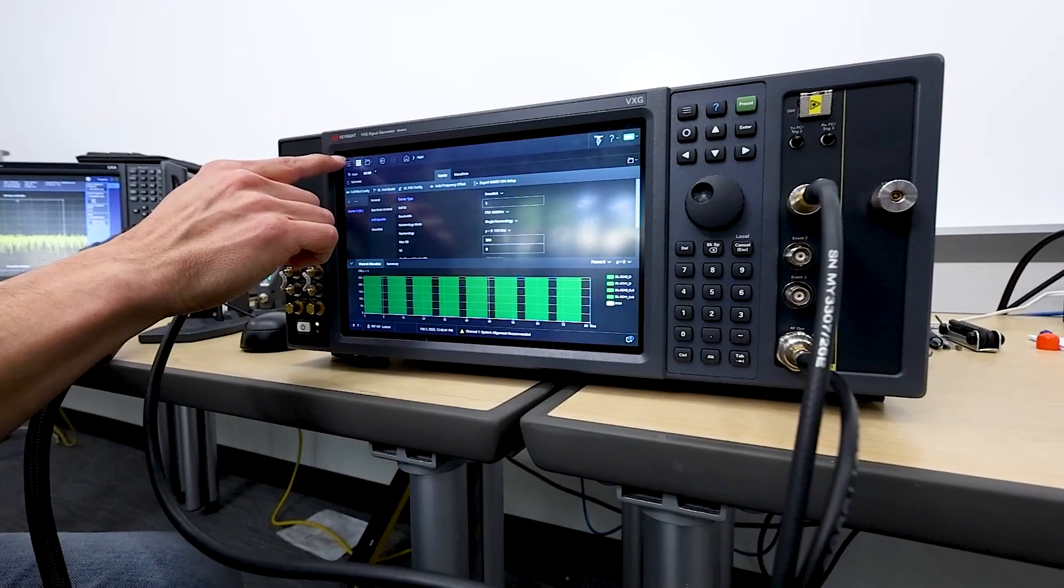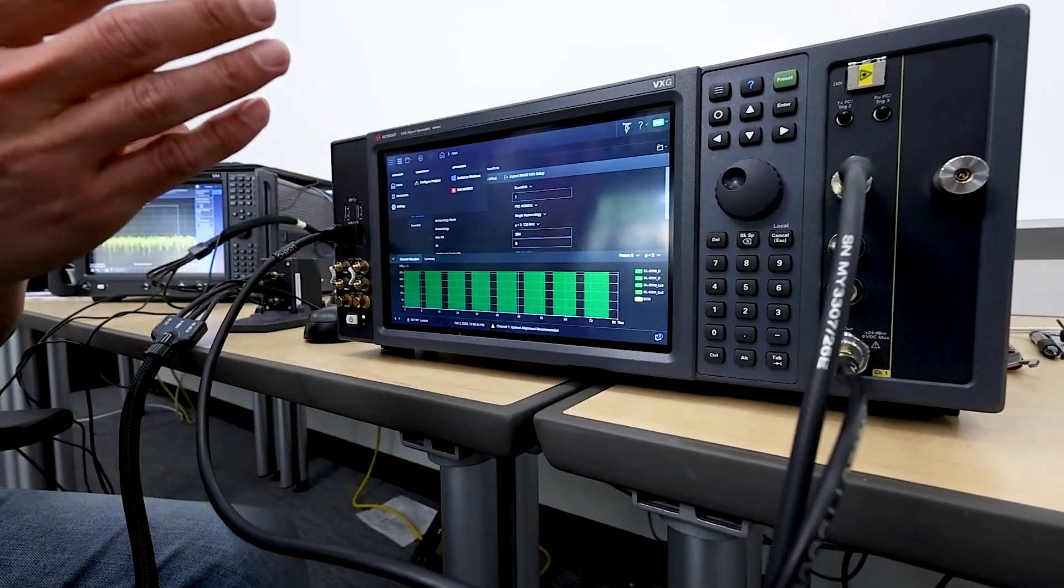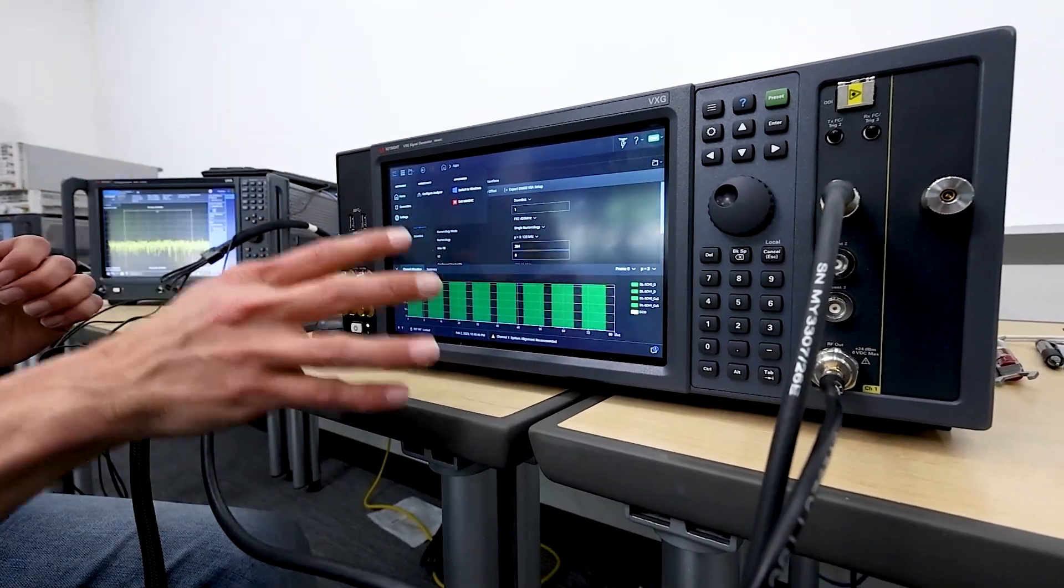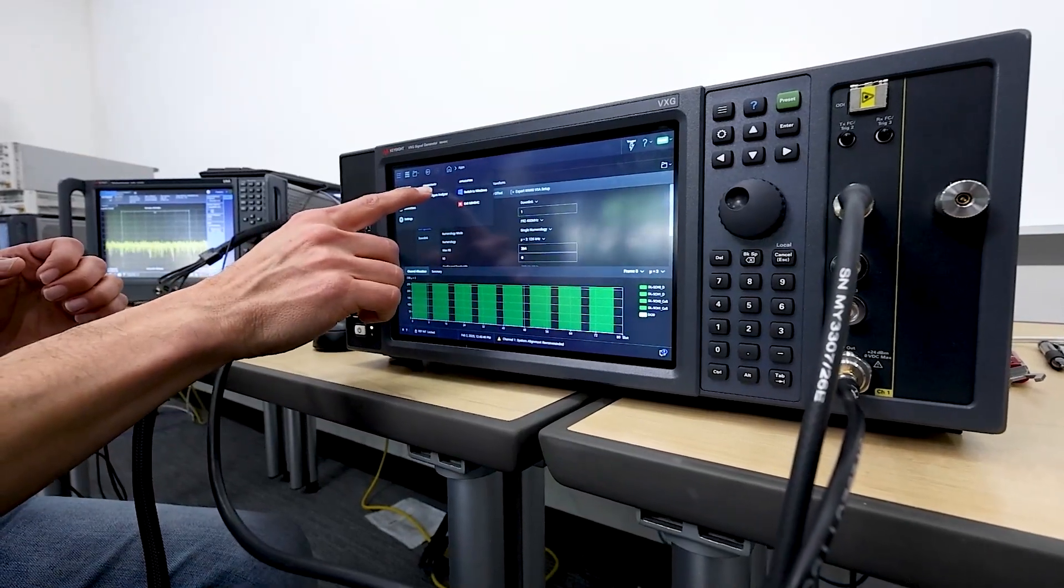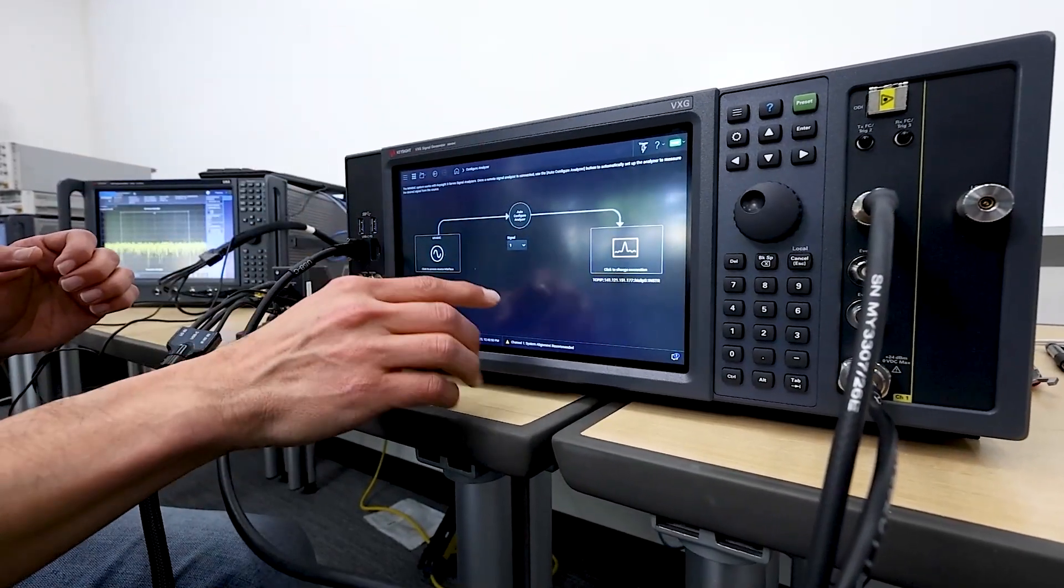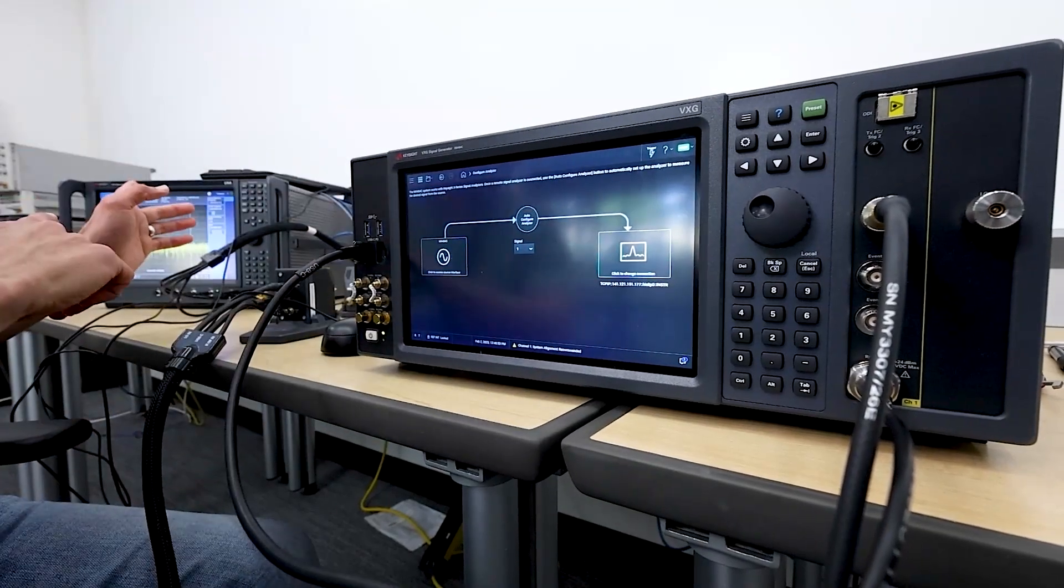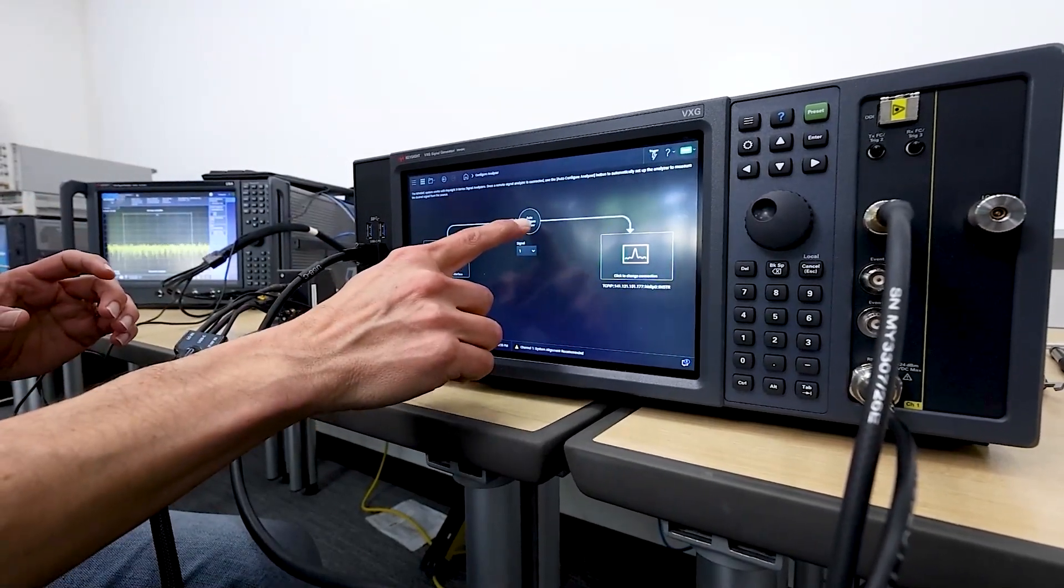Now let's go to system, and what we're going to do is configure the analyzer from the VSG. So I'm going to hit on configure. I already set up the IP address of the analyzer, so I'm going to hit auto configure.